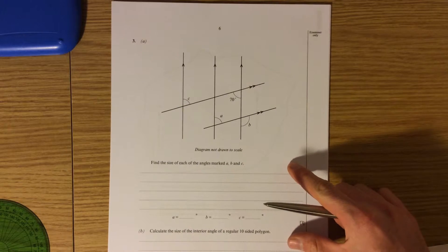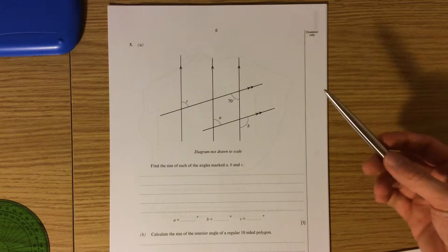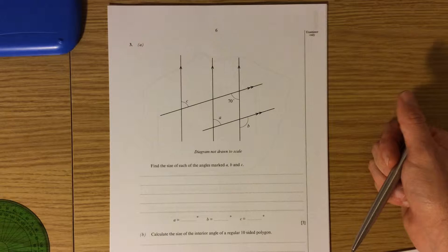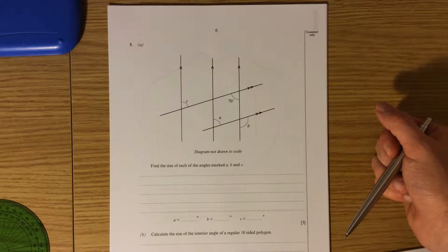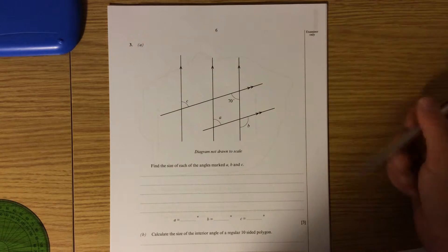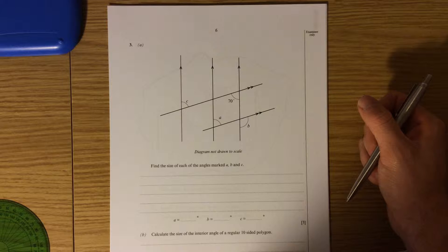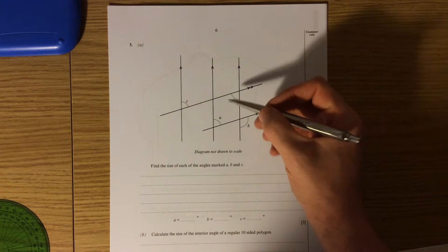Question number three. Find the size of each of the angles marked A, B and C. As soon as you see these arrowheads put on, you need to be thinking that these are going to be alternate, corresponding, allied angles, F's, Z's and C's. In any of these questions what I suggest you do is ignore the letters you are looking for and just fill in any information you can. And then you will come across the answers as you need them.